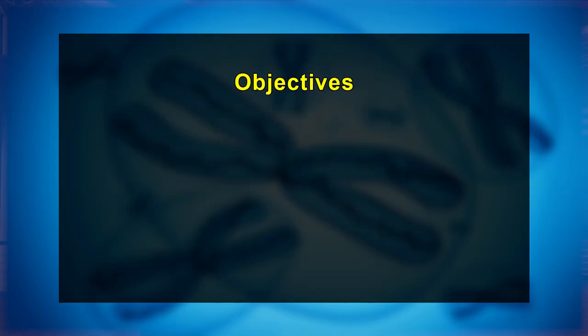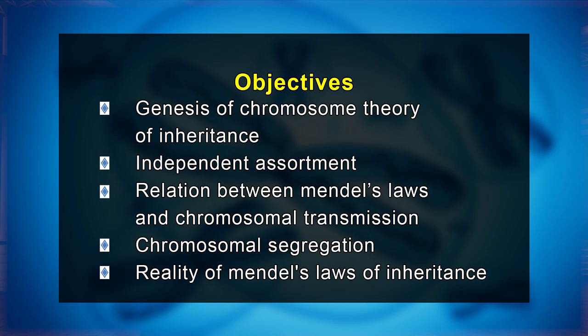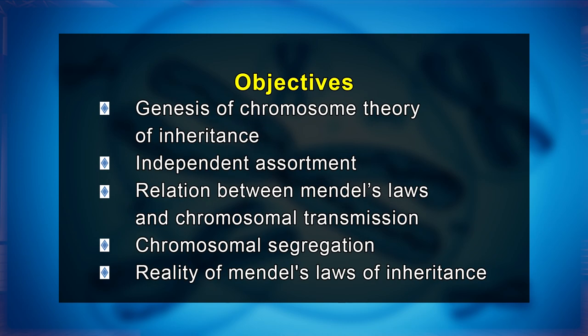The main objectives of today's module are to know about the genesis of chromosome theory of inheritance, to know about independent assortment, to know about the relation between Mendel's laws and chromosomal transmission, to know about chromosomal segregation, and finally to know about the reality of Mendel's laws of inheritance.